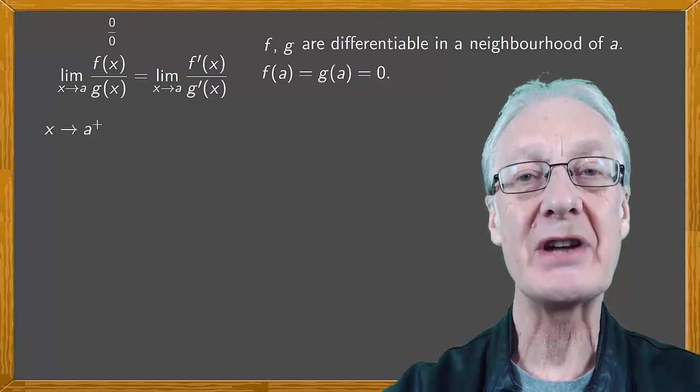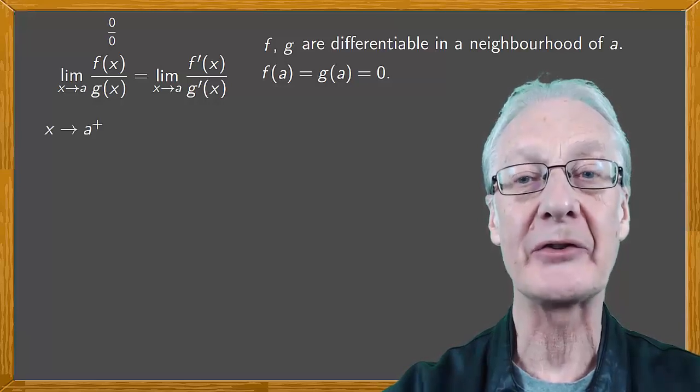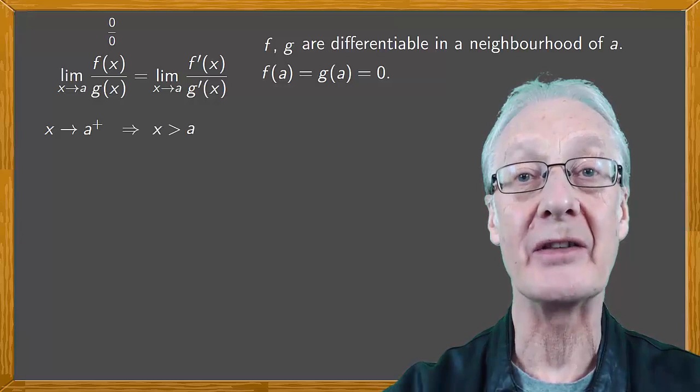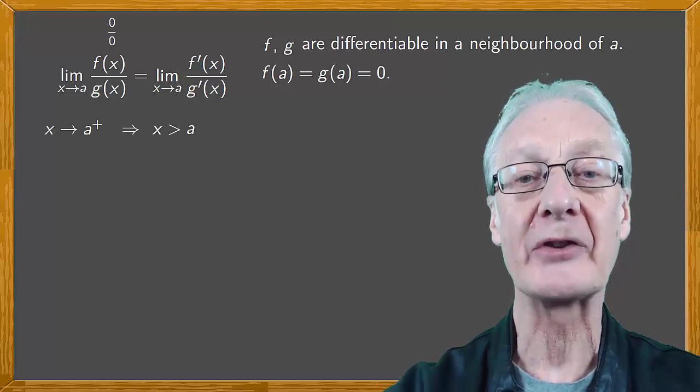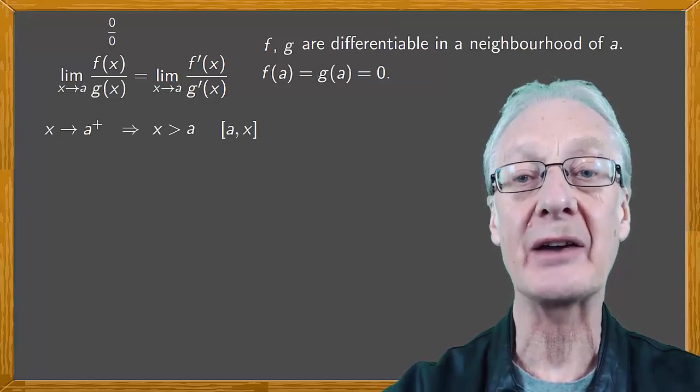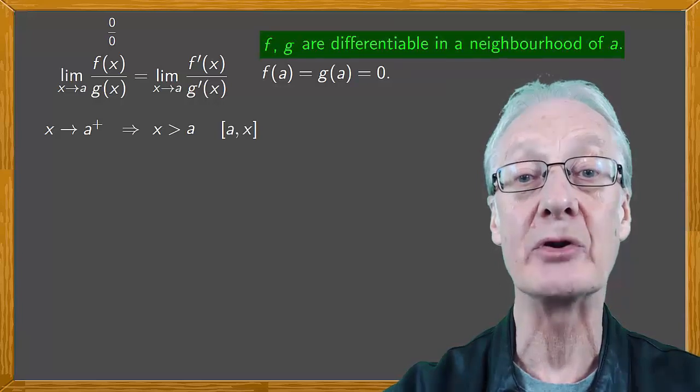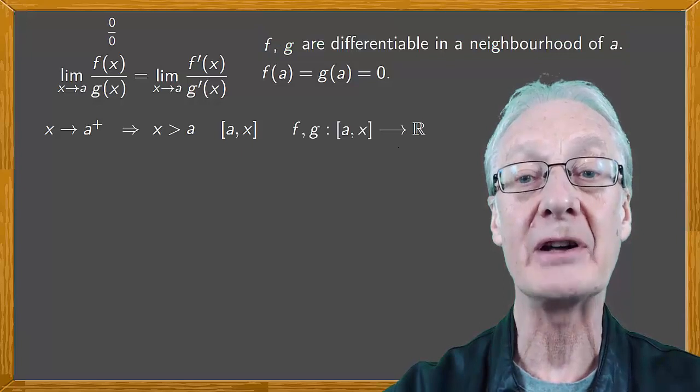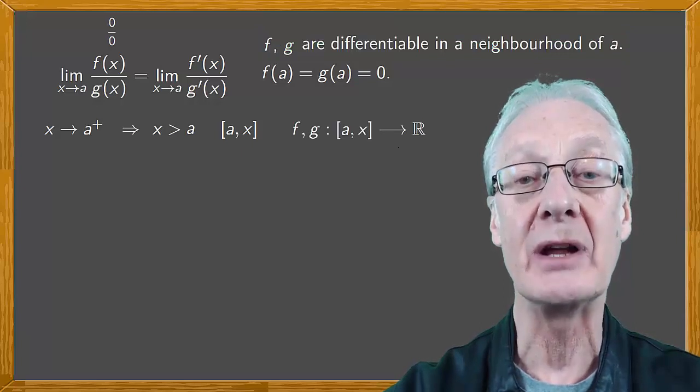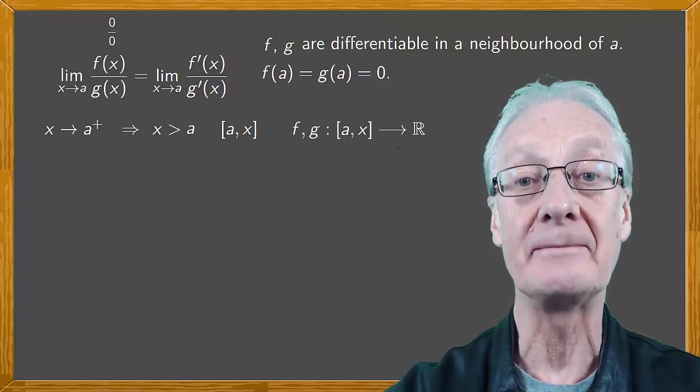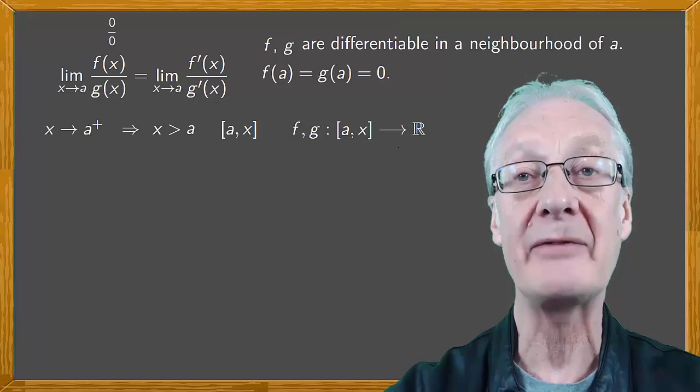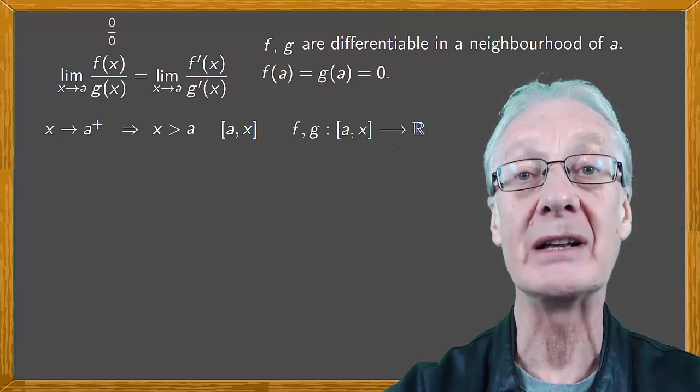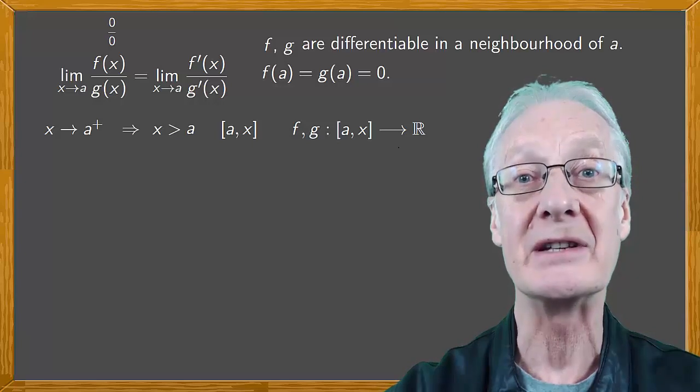So as x tends to a from the right, in our case x is greater than a. We're considering values of x so that the interval [a,x] is included in the neighborhood where f and g are differentiable. We have f and g defined in the interval [a,x] in R and what we do is apply to f and g the Lagrange mean value theorem in this interval.